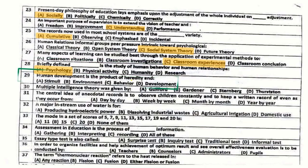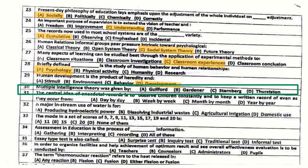Question number 29: Human development is the product of heredity and environment.